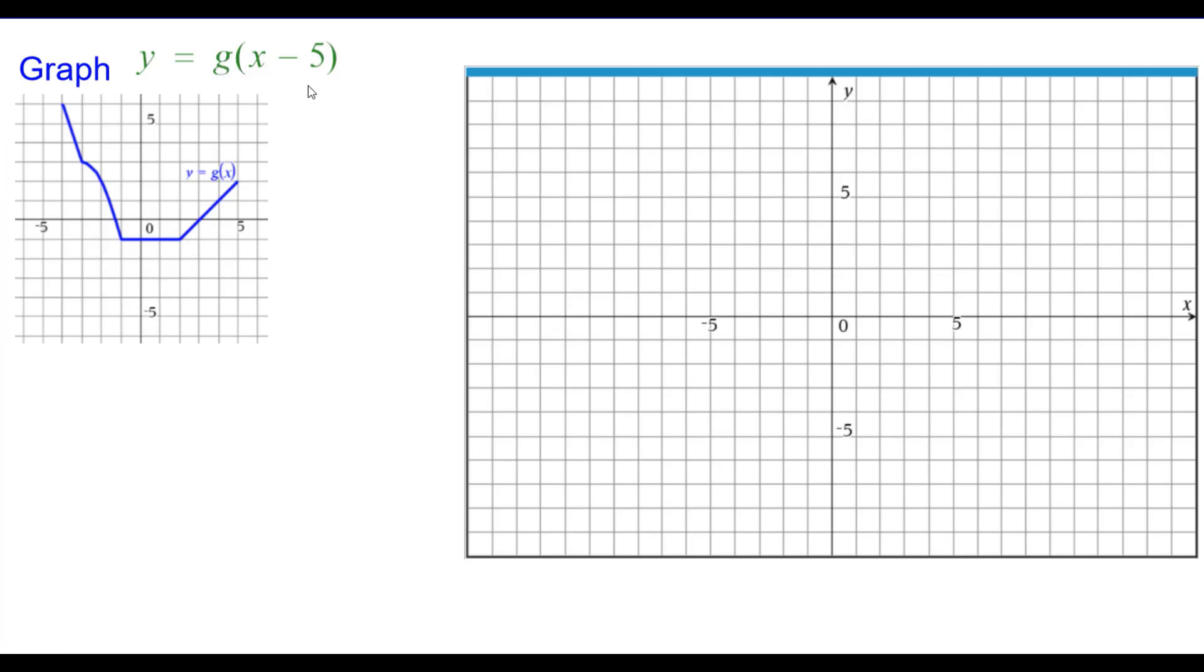Graph y equals g of the quantity x minus 5, given the graph of y equals g of x here in blue. Since we don't know the dance for this function, we will graph using a table.